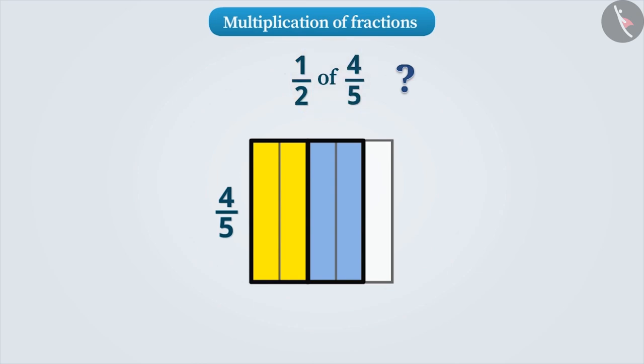If we observe, this part is made up of two parts out of all the five parts of the whole number. Hence, it can be expressed as 2 fifth. Therefore, we can say that half of 4 by 5 is equal to 2 by 5.